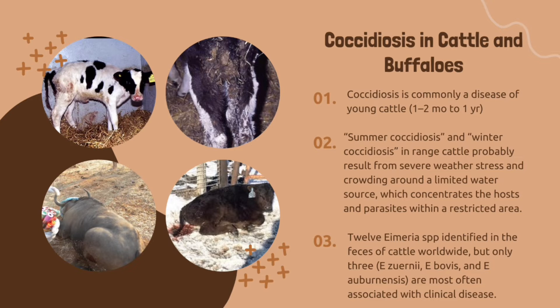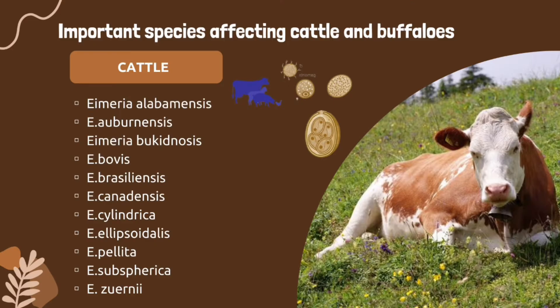Only three species are most often associated with clinical disease: Eimeria zuernii, Eimeria bovis, and Eimeria auburnensis. The other Eimeria species have been shown experimentally to be mildly or moderately pathogenic but are not considered important pathogens.